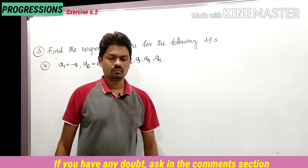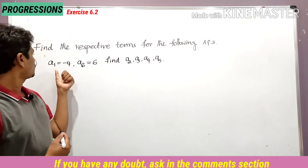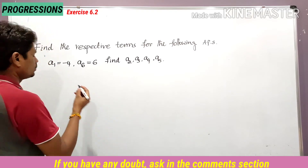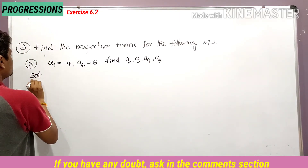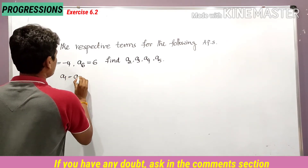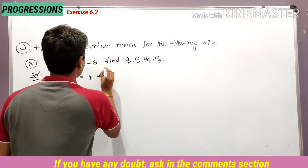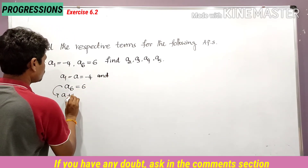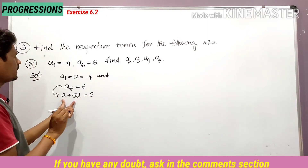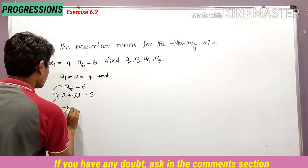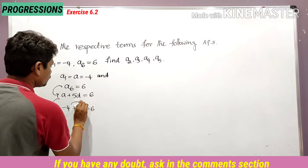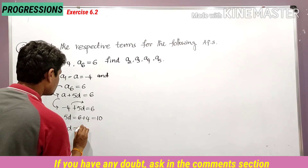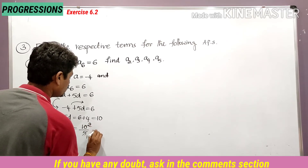Fourth bit of the third problem: a1 is equal to minus 4, a6 is equal to 6. Find a2, a3, a4, and a5. a1 itself is 'a', so a is equal to minus 4. a6 can be written as a plus 5d is equal to 6. Substituting a equal to minus 4: minus 4 plus 5d equals 6, so 5d equals 10, therefore d is equal to 2.